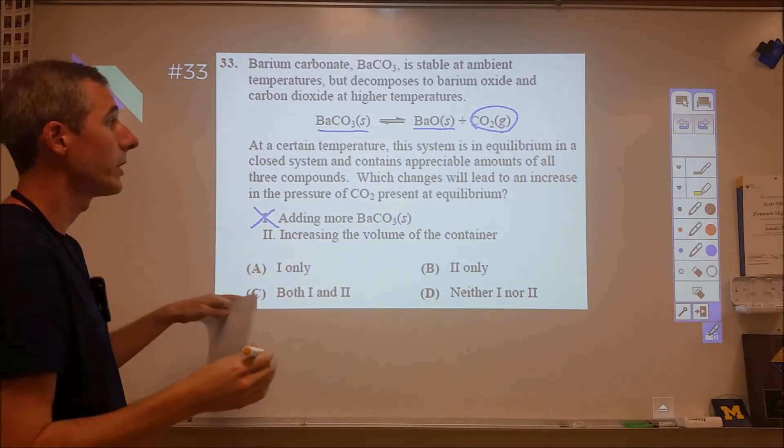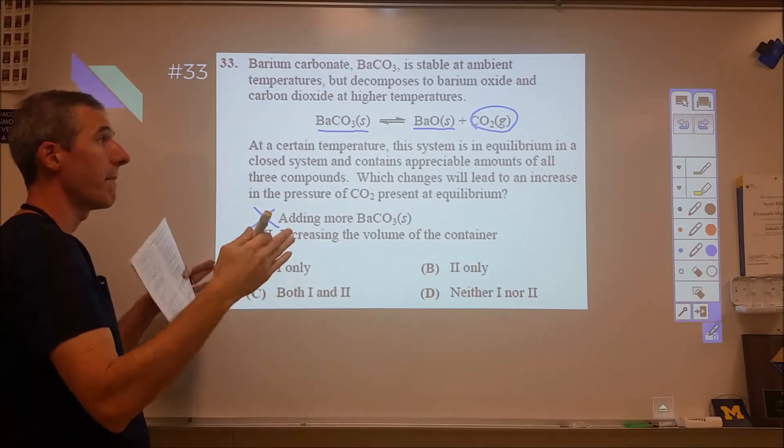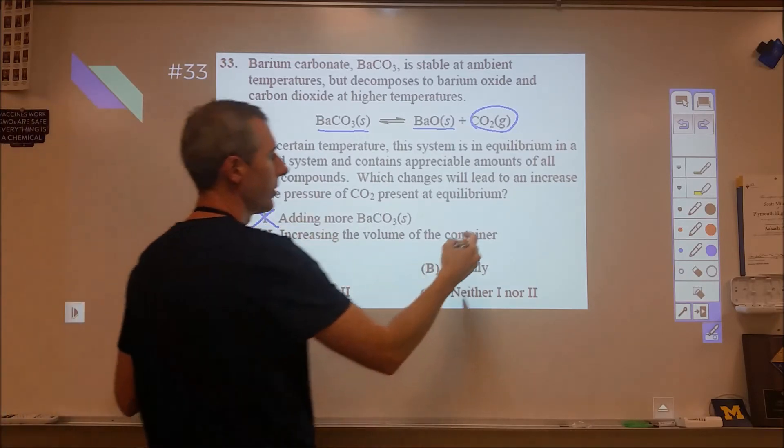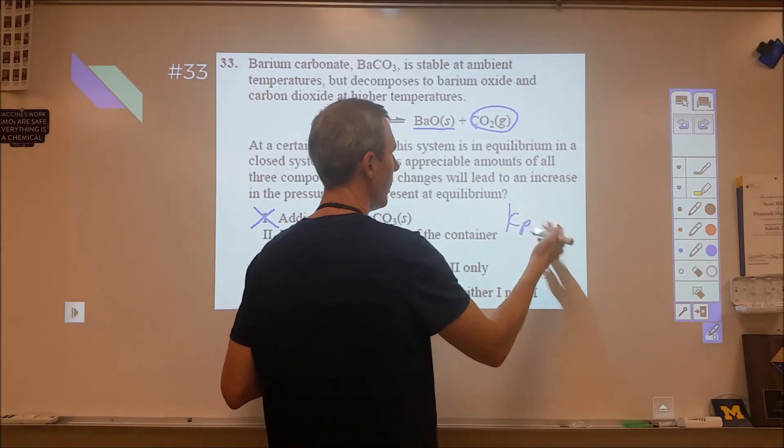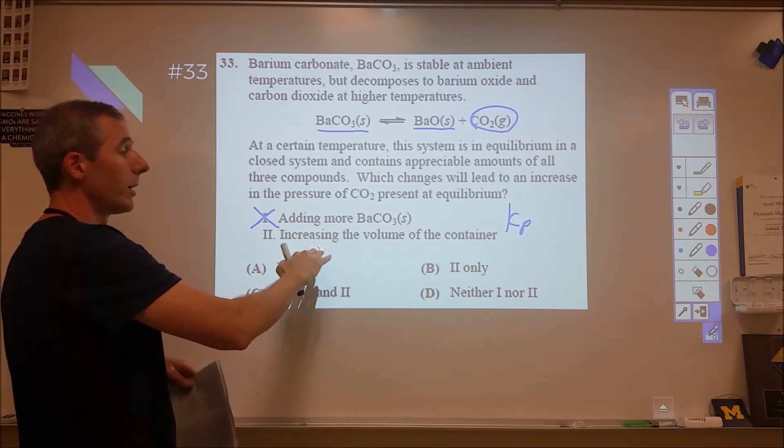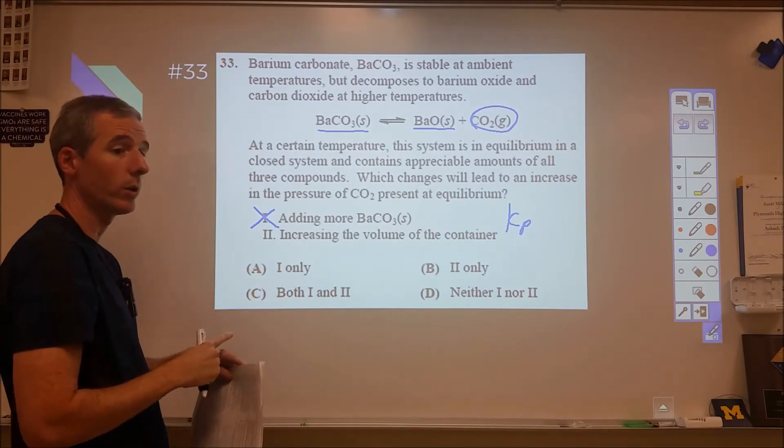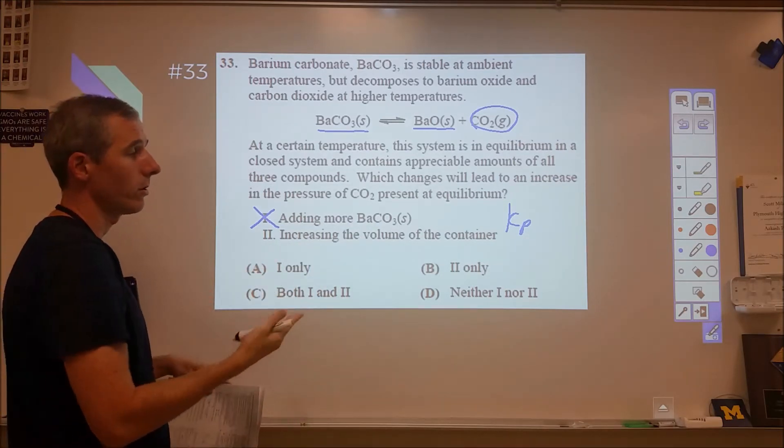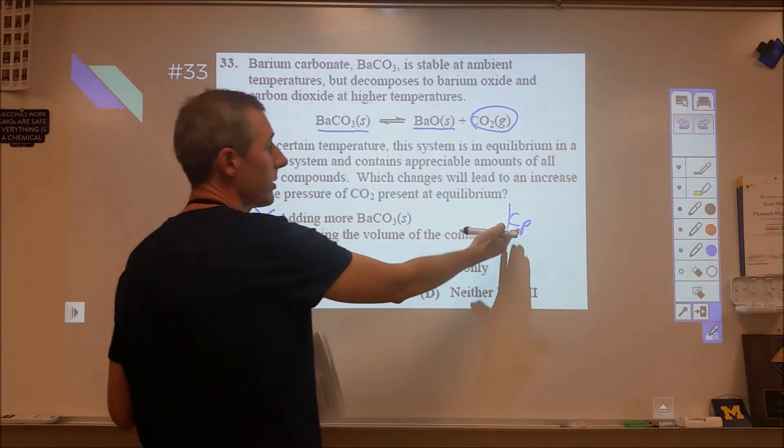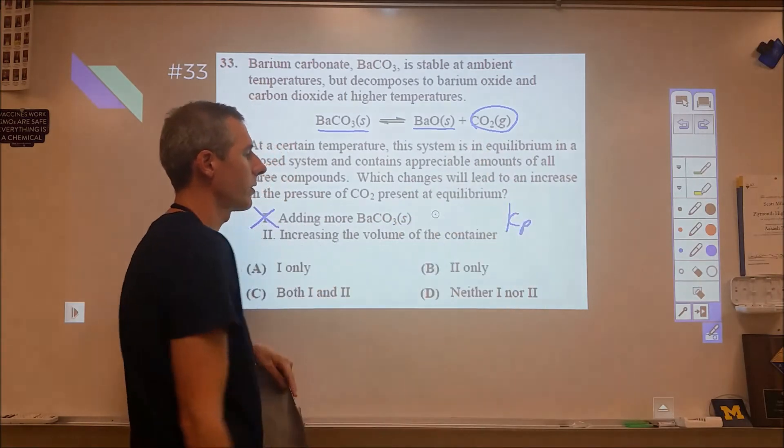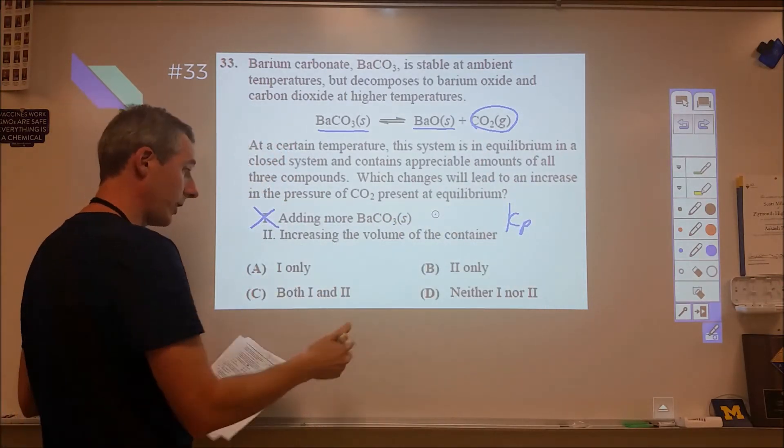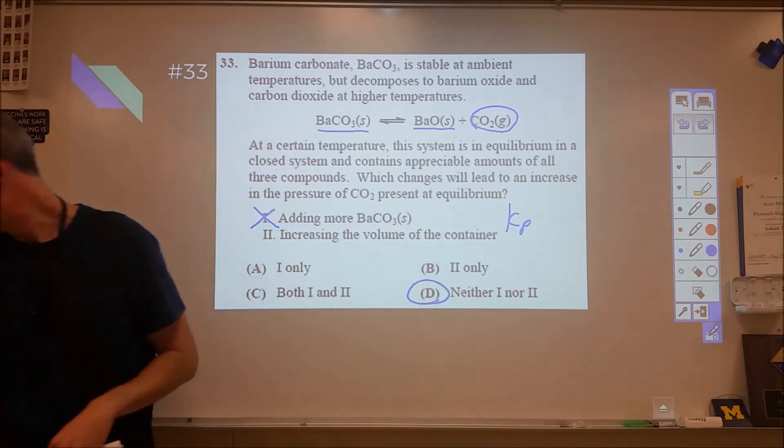And then increasing the volume of the container will lead to an increase in amount of CO2. It will not lead to an increase in pressure of CO2. Really simply here, if we're looking at a Kp value, it's going to be equal to whatever the pressure of the CO2 is. And that's not changed. The only time your equilibrium constant changes is when your temperature changes. And so the fact that we're dealing with just an increase in volume means that our Kp is going to remain constant, which means that our pressure will also remain constant. So for 33 here, we're looking at neither 1 nor 2, and D is our correct answer.